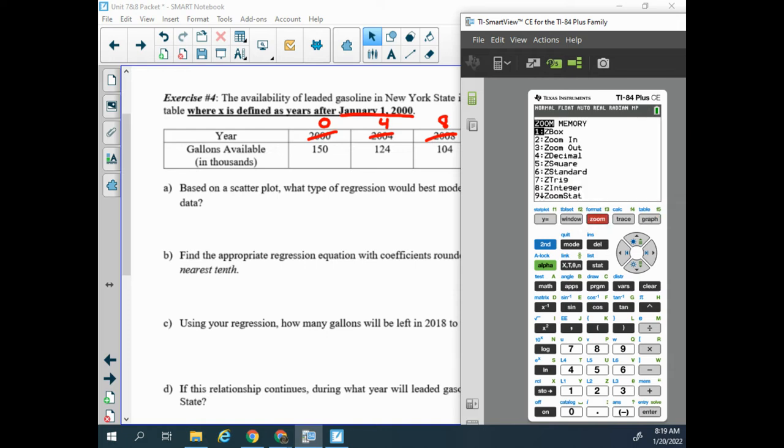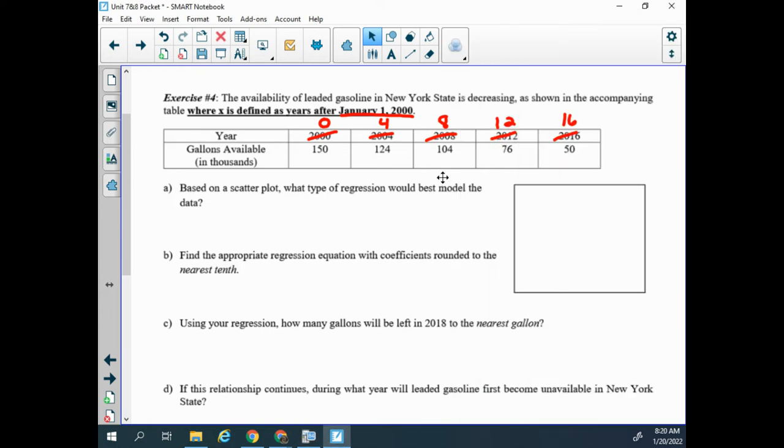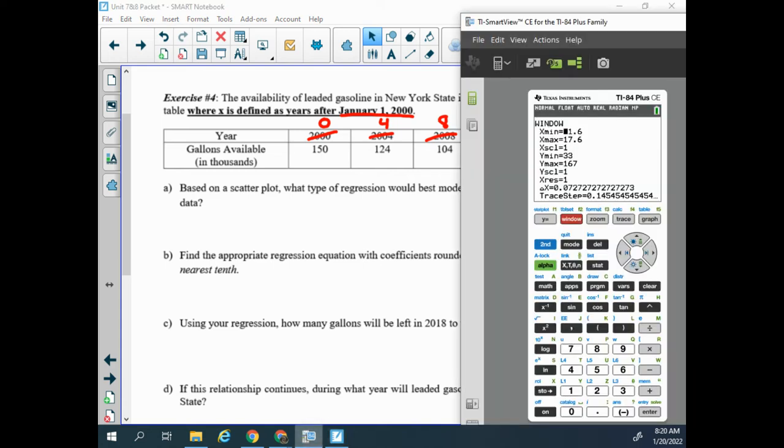Whenever we have this stat menu and we're using that for a scatterplot, we have to press again zoom 9 when we enter new data. So now my window is zoomed in on the points I have. So if I go to window negative 1 to 17, 133 to 167, that looks good for these values in my table.